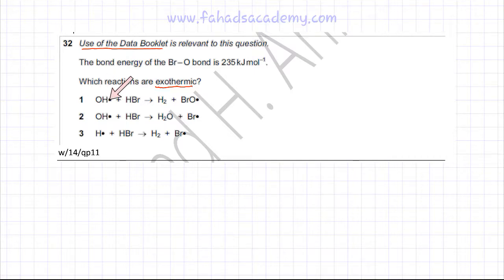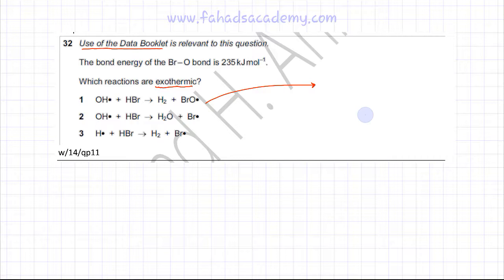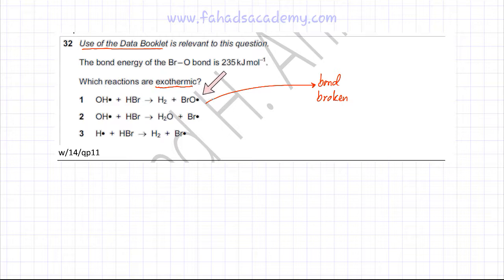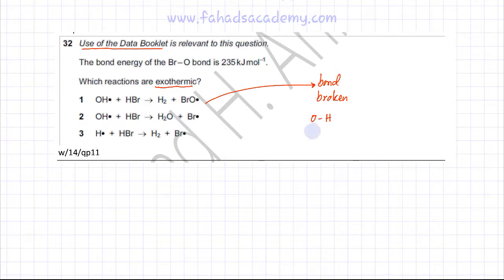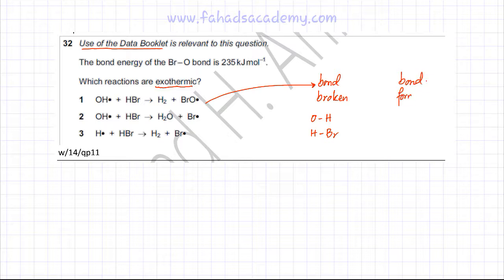Looking at the first option: an OH molecule reacts with an HBr molecule to produce H2 and BrO. We need to figure out how many bonds are broken and how many are formed. The OH bond needs to be broken because there is no OH bond in the products, and the HBr bond is also being broken because there is no HBr molecule in the products either.